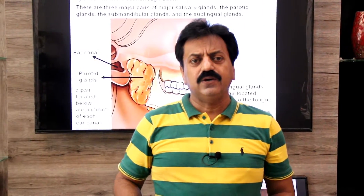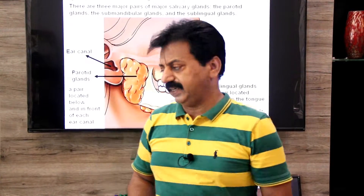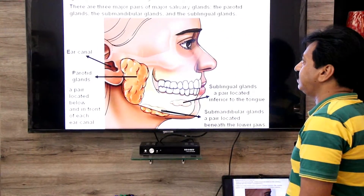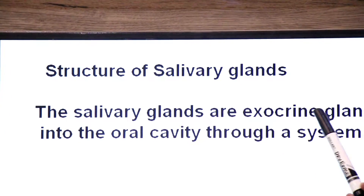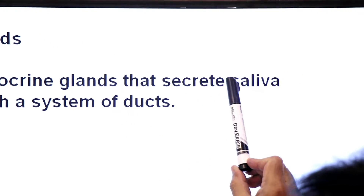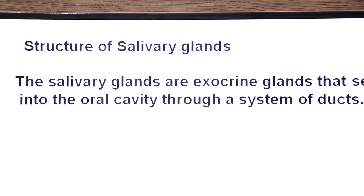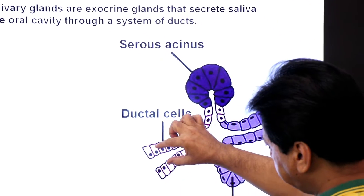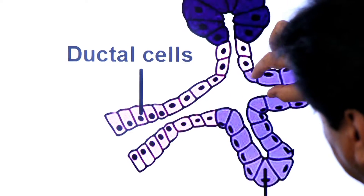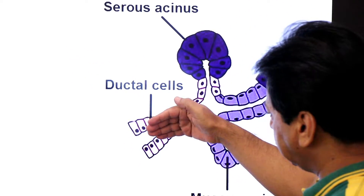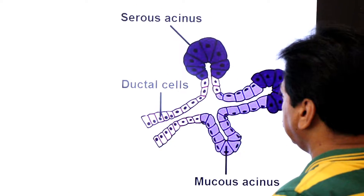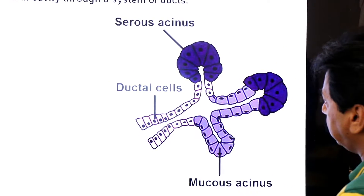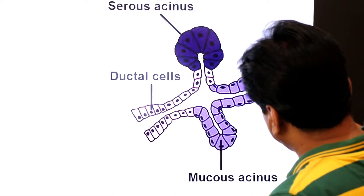Now we will first study the structure of salivary glands, and then we will study the composition and functions of saliva. The salivary glands are exocrine glands that secrete saliva into the oral cavity through a duct system. There is a major collecting duct which collects saliva from smaller ducts, and then this major duct opens into the oral cavity.